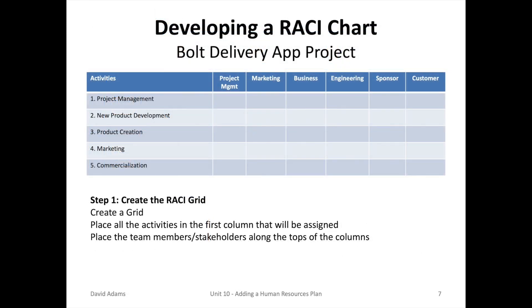When creating a RACI chart, we don't have a standardized template. Rather, it's very easy to create by just making a simple grid. You place the activities in the first column and all the key players along the top, which includes your project team, your sponsor, your customer, and may expand to other stakeholders.